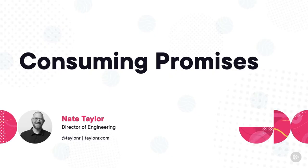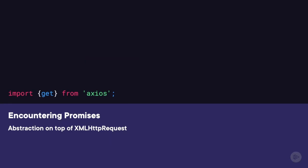Now that you've seen a glimpse of why you'd want to use promises, it's time to start seeing them in action. For most JavaScript developers, the first time they'll encounter promises is when they consume another library. An example is one of the most popular HTTP request libraries, Axios — at the time of this recording it was averaging 36 million downloads a week. This library is an abstraction on top of the XMLHttpRequest calls you saw in the last module, and one of the key abstractions is that it is promise-based.